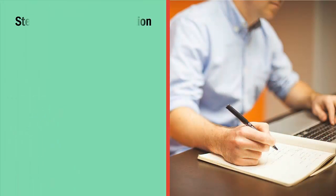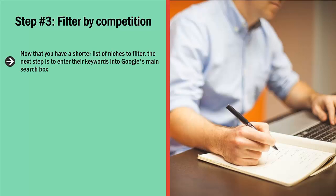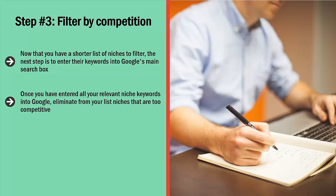Step 3: Filter by Competition. Now that you have a shorter list of niches, enter their keywords into Google's main search box. When you enter a search phrase into Google, you will get results, and at the top left corner, Google will inform you how many pages target that search phrase. Take note of this number and write them down next to each niche keyword. Once you have entered all your relevant niche keywords into Google, eliminate from your list niches that are too competitive — those that have too many pages targeting them.